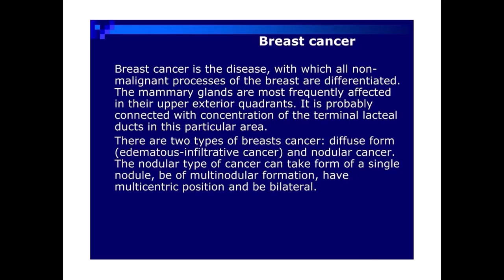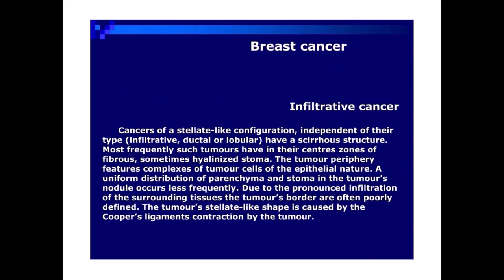The nodular type of cancer can take the form of a single nodule, be of multinodular formation, have a multicentric position, and be bilateral. Cancers of a stellate-like configuration, independent of their type — infiltrative, ductal or lobular — have a cirrus structure.